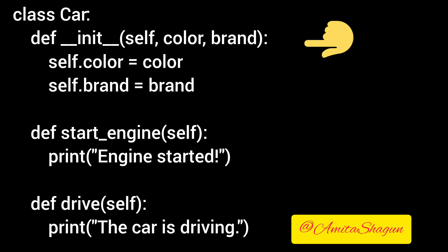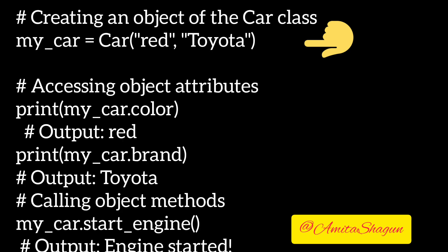We create an object called my_car using the Car class, passing the values red and Toyota for the color and brand attributes, respectively.